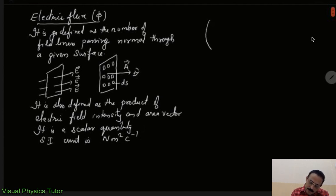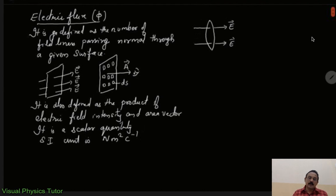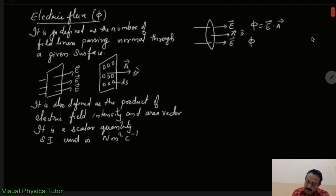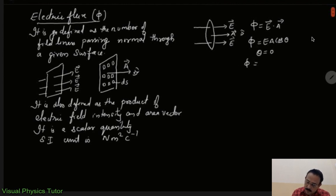Let us consider a surface and assume a number of field lines penetrating normally. This gives the electric flux. If I am looking from this direction, the direction of the area vector will also be in this side. So the electric flux can be written as phi equals E vector dot A vector. Alternatively, removing the dot product, we can write phi equals EA cos theta. In this diagram, the angle between the electric field vector and the area vector is zero, so theta equals zero, giving phi equals EA.